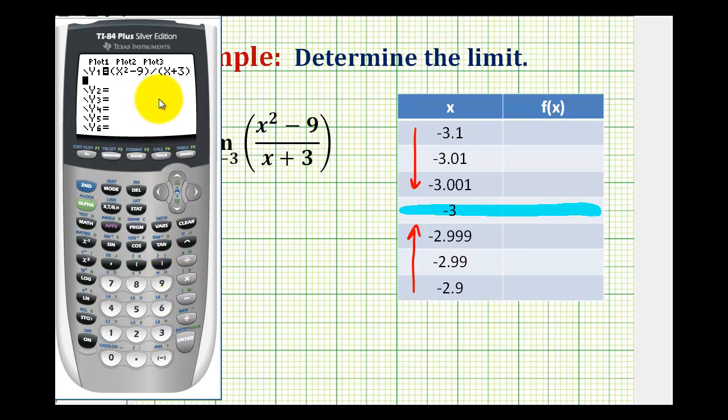Now if we put our table in ask mode, we can just type in these values very quickly. So if we press second window for the table set, we're going to go down to the independent variable and highlight ask, press enter. And now if we go to the table by pressing second graph, we can type in these exact values.